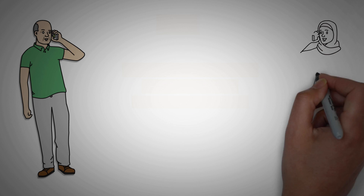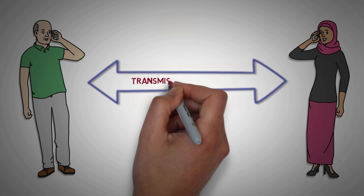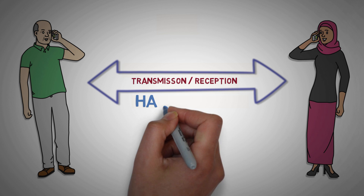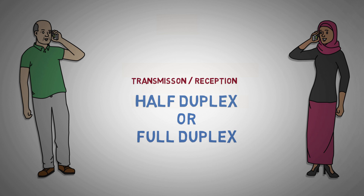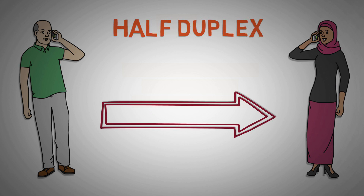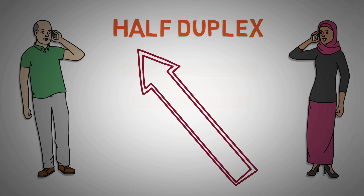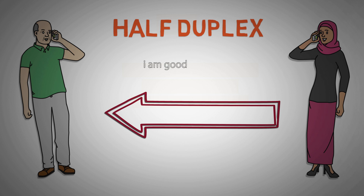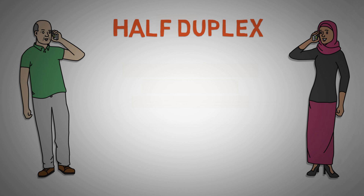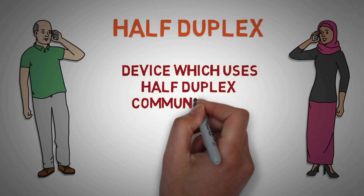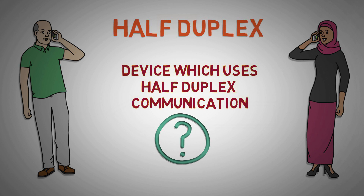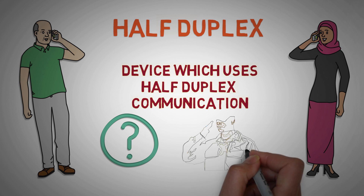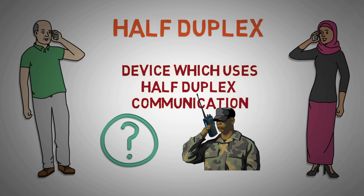Duplexing is the process of achieving two-way communication over a communication channel. It can be half duplex or full duplex. Half duplex stands for one-way communication at a time, which means the other party has to listen when you are talking, and you have to listen when the other party is talking. An example of a device that uses half duplex communication is a walkie-talkie, which has a push-to-talk feature.